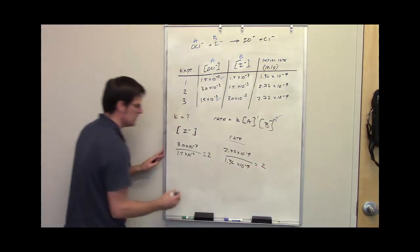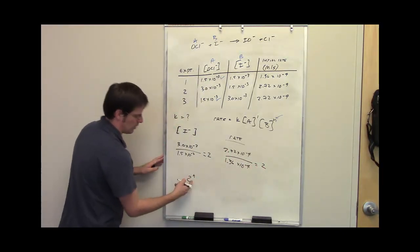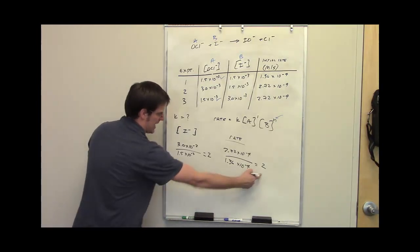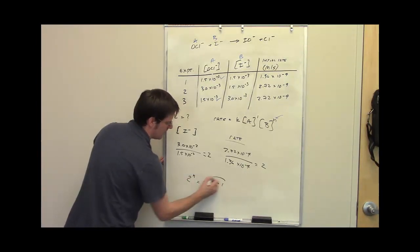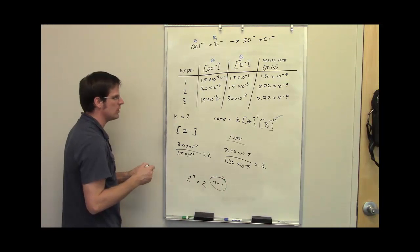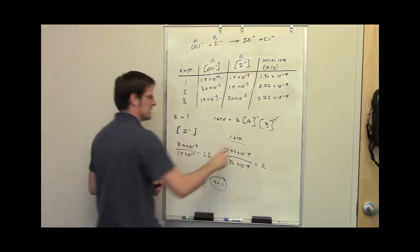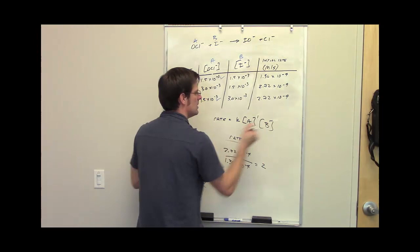So now I take this number, raise it to the nth power, and set it equal to that number. What is n? n is 1. 1 is the reaction order with respect to component B, the iodide. So I can change this n up here to 1.